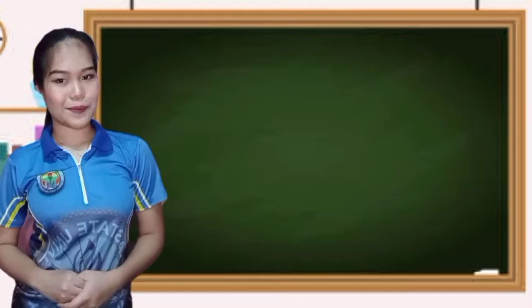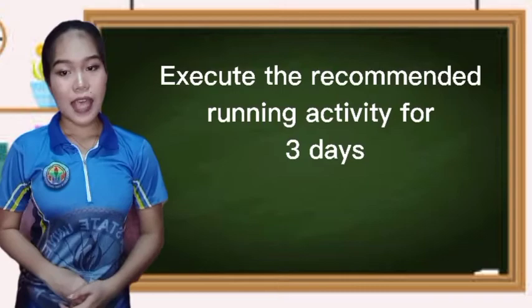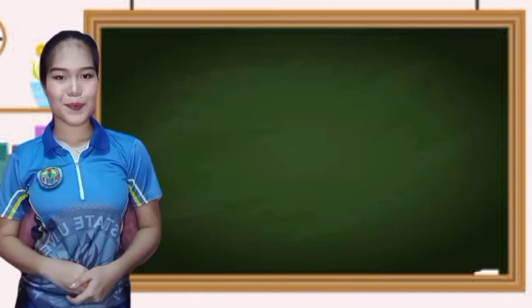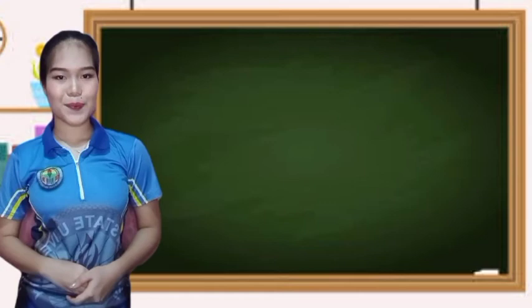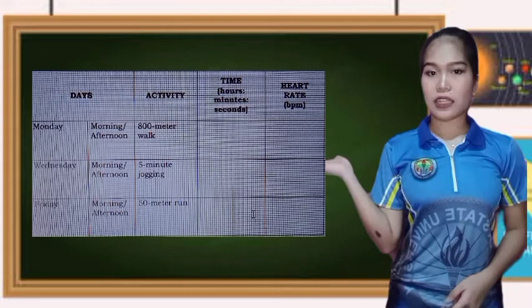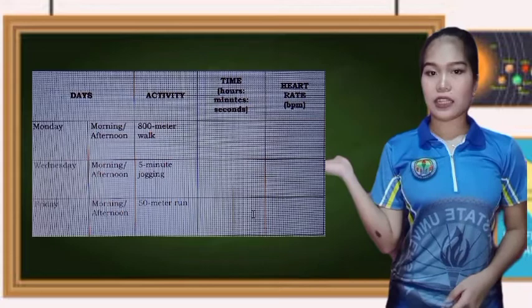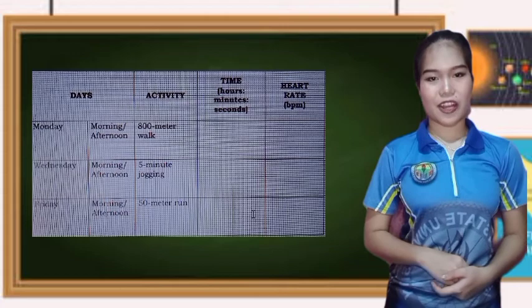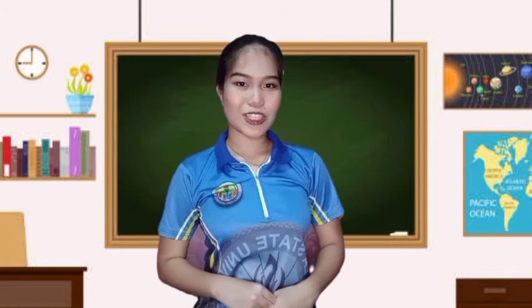Now let's proceed to the directions for your activity. First, perform a warm-up exercise before doing the activity and cool down after. Next, execute the recommended running activity for three days. And lastly, record your heart rate and running time on your weekly activity log. The table posted on your screen will be your activity log for three days. Copy it on your paper so you can start your activity. That is all for today. I hope you enjoyed and learned from our topic. See you in my next lesson and enjoy the activity. Goodbye, class!